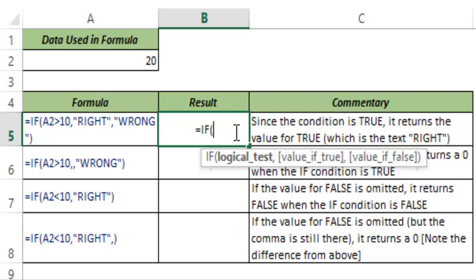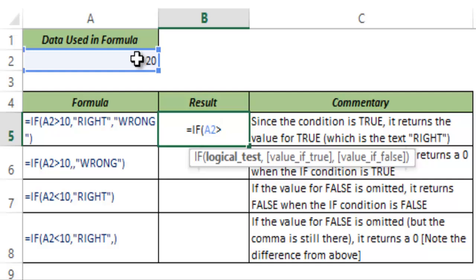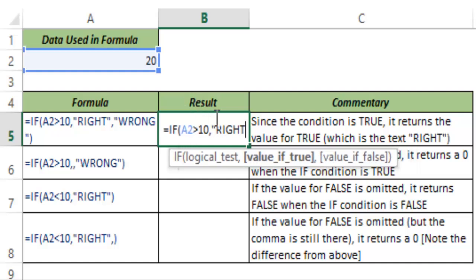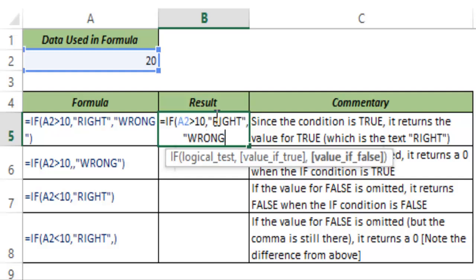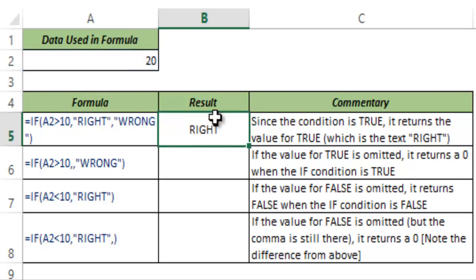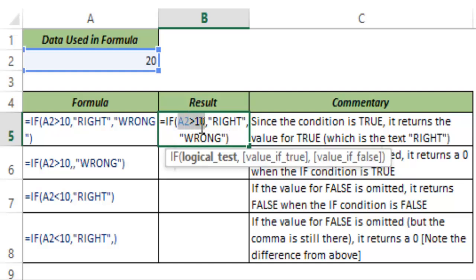Now let me show you how this works. I select A2 and say: if this is greater than 10 — a condition that returns true or false — and if this returns true then give me 'right', else the formula should return 'wrong'. I hit Enter and you can see it returns 'right' because A2 is 20 and 20 is greater than 10.